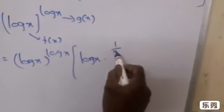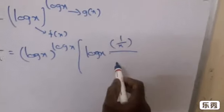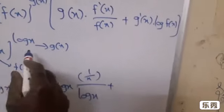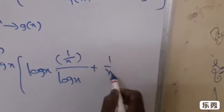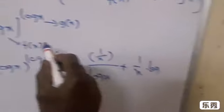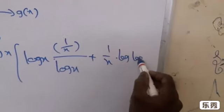f'(x), which is the derivative of log x, equals 1/x, divided by f(x), which is log x, plus g'(x). Since g(x) is log x, g'(x) is 1/x. And f(x) is log x.